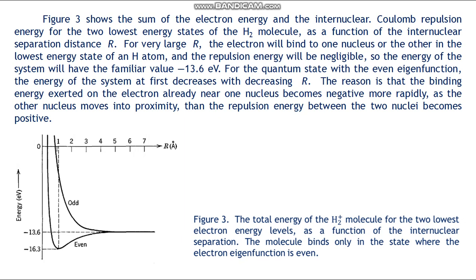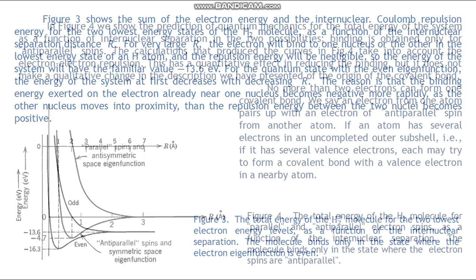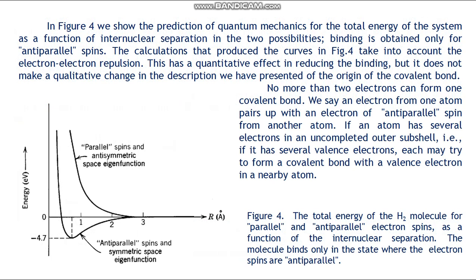If we imagine forming H₂ by bringing two separated hydrogen atoms together, it would make a decisive difference whether the electron spins were parallel or anti-parallel. Figure 4 shows the prediction of quantum mechanics for the total energy of the system as a function of internuclear separation for both possibilities. Binding is obtained only for anti-parallel spins. The calculations that produce the curves in figure 4 take into account the electron-electron repulsion, which has a quantitative effect in reducing the binding but does not make a qualitative change in the description of the origin of the covalent bond.